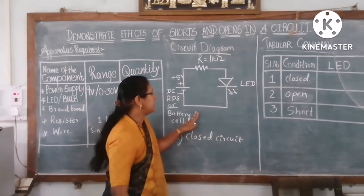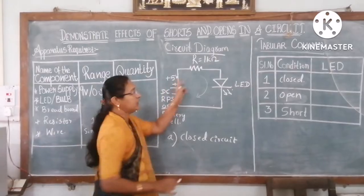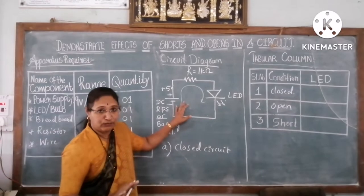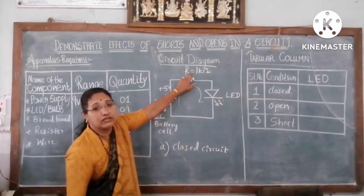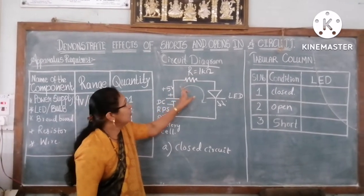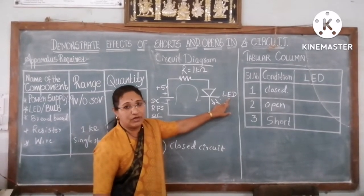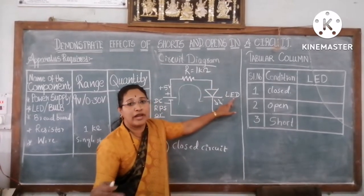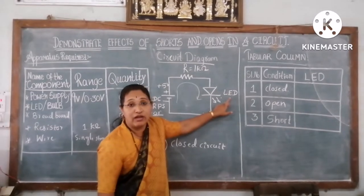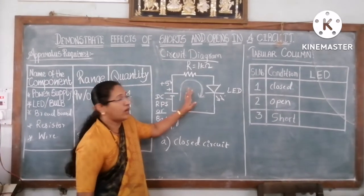From this circuit, let us understand: when we give the supply, the current starts flowing in the closed circuit. The resistance opposes the flow of current. When we increase the resistance, the current will decrease; when we decrease the resistance, the current will increase. When current flows through this circuit, the LED glows. When the current increases, it will glow more — the brightness will increase. When the current is reduced, the brightness will decrease. This happens only when the circuit is closed.